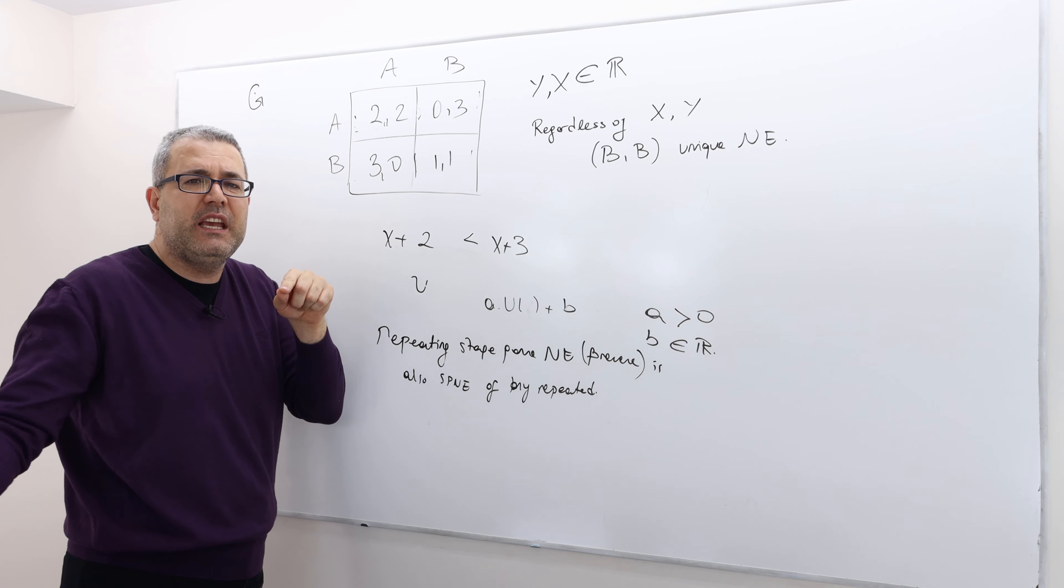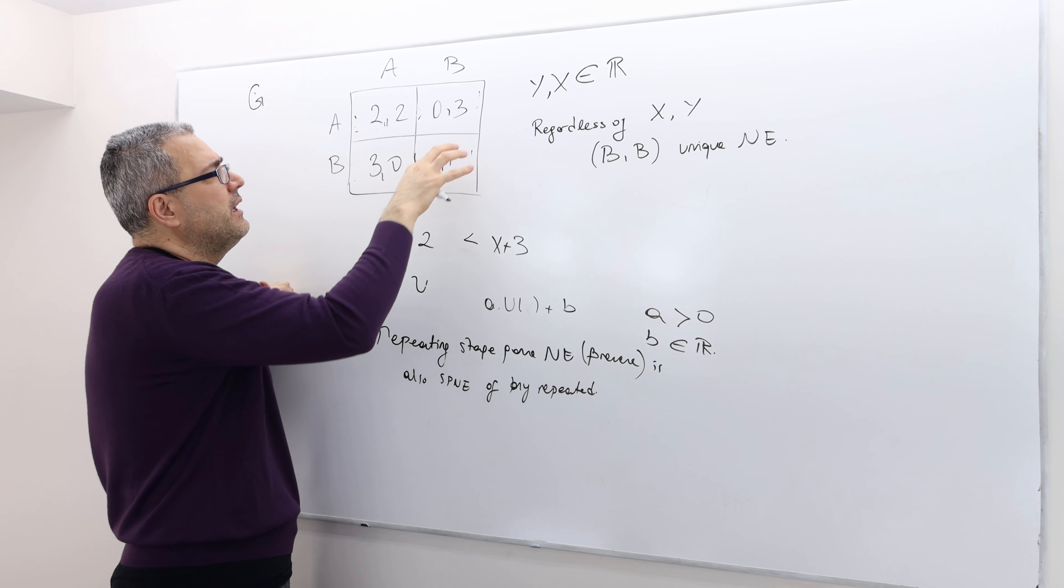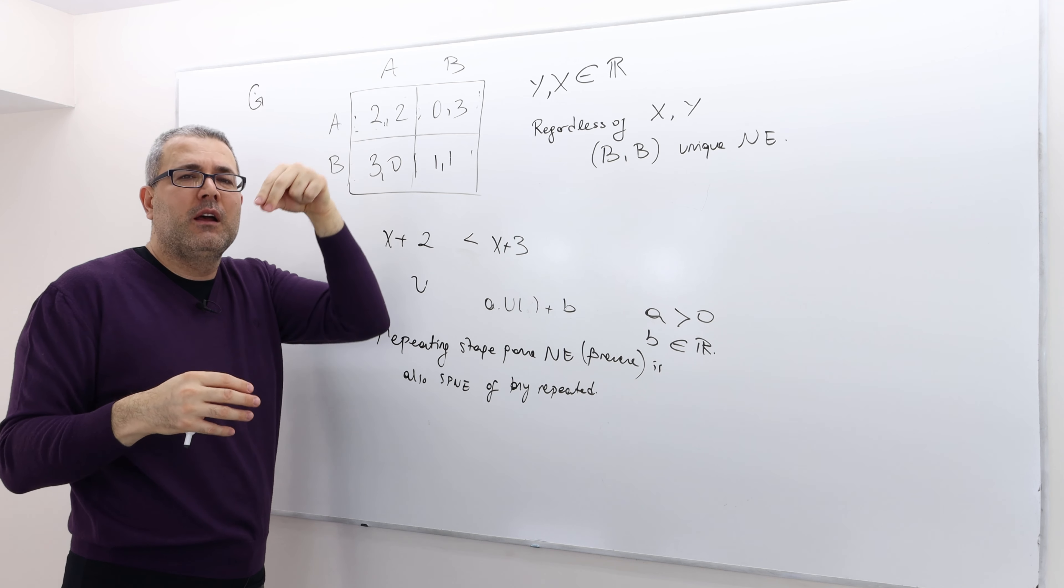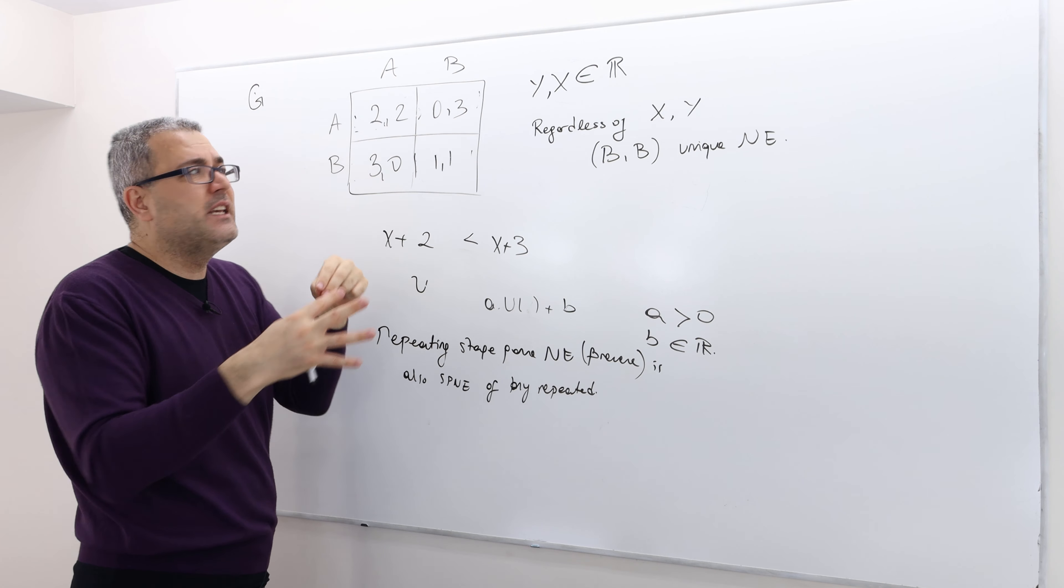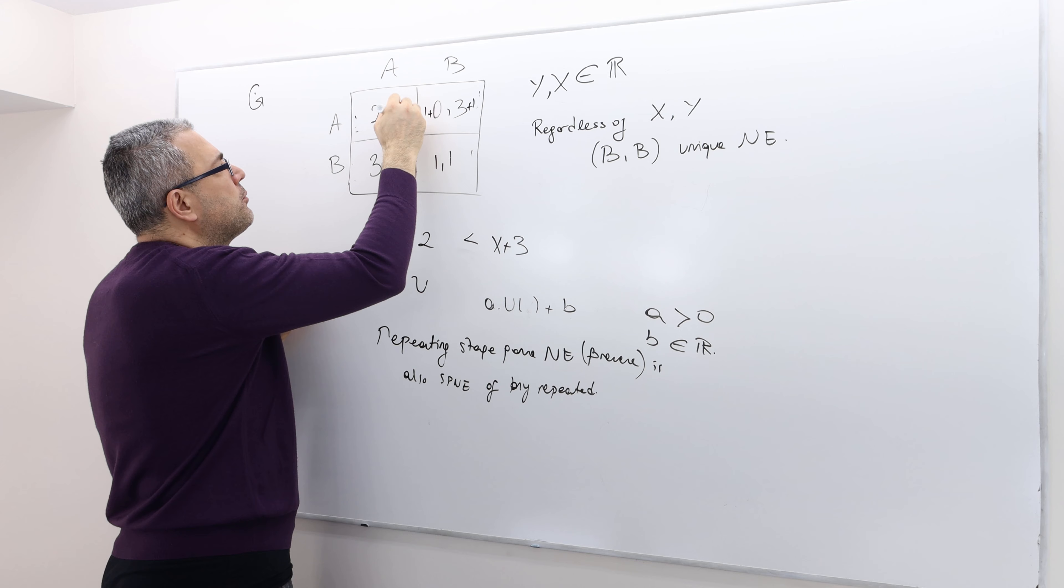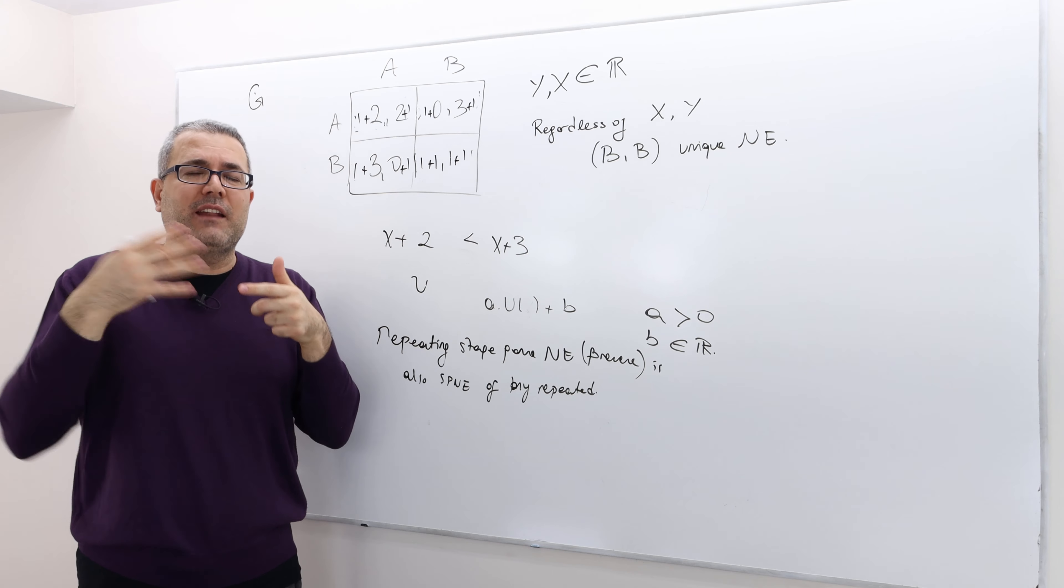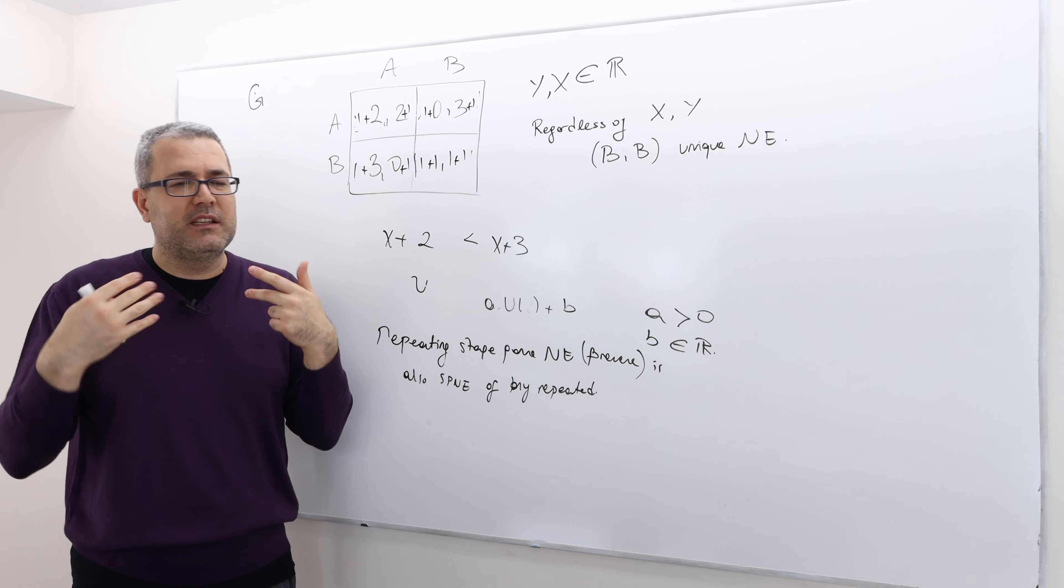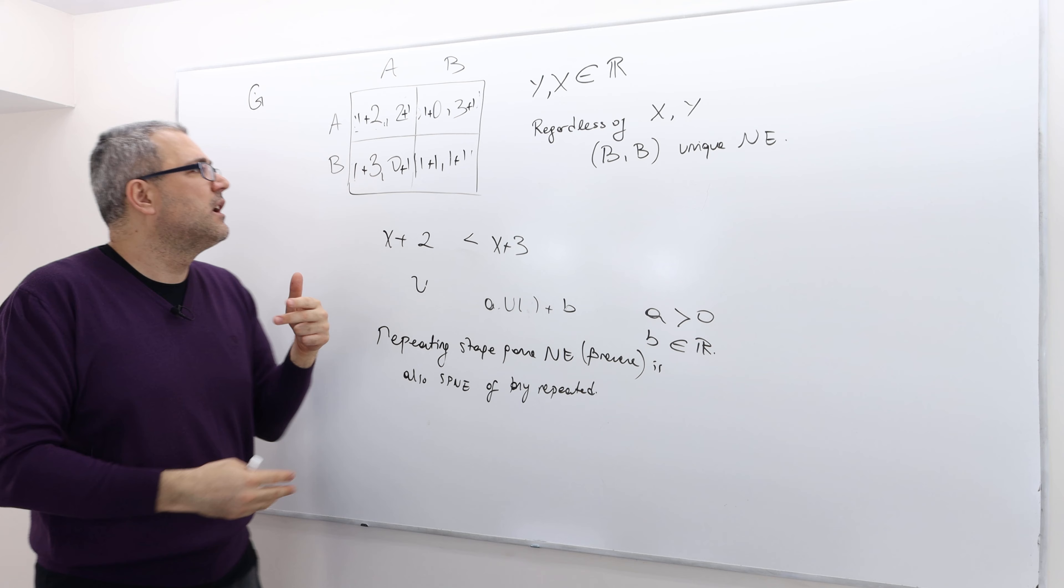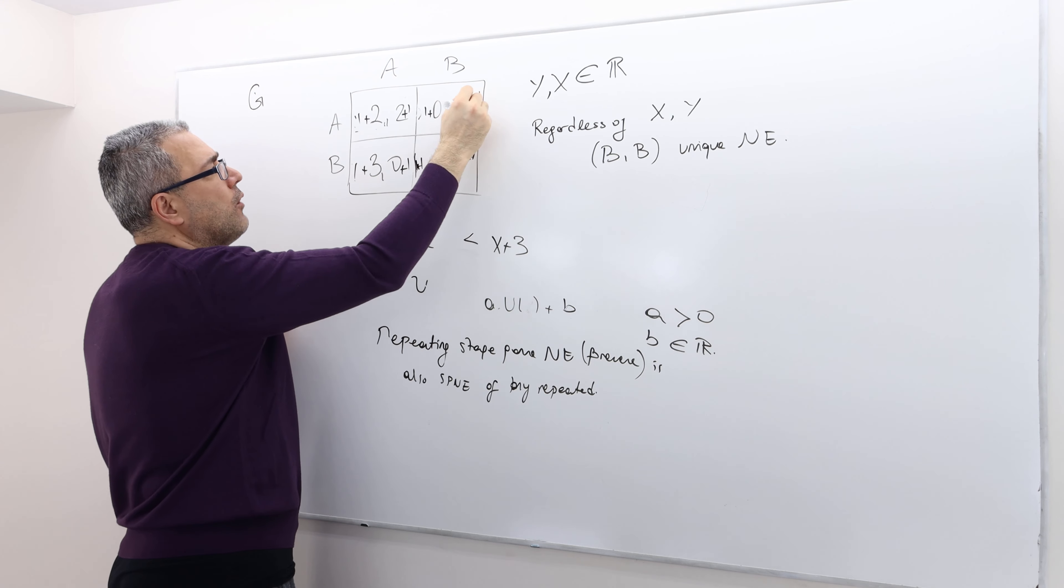Well, the game is going to look like this payoff matrix plus one, one. Why one, one? Well, because in the period T, we all are going to play B. And so each of us are going to get one. So what's going to happen is when these players look at this repeated game, Prisoner's Dilemma, from period T minus two, what they're going to see is, in fact, a strategic form game where we add one to each player's payoff. And then if they look at this game from period T minus three, the same thing. Because they are, again, remember playing BB at all stages? What they are going to see is adding another one to all those payoffs.